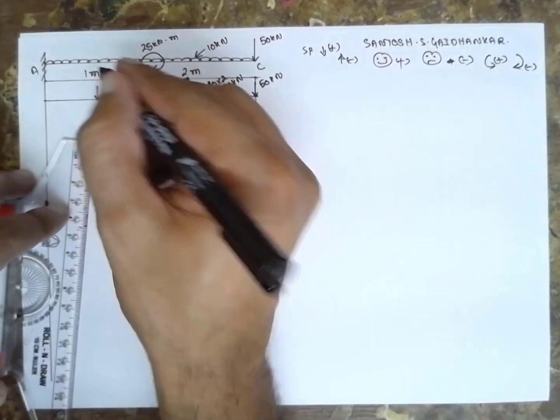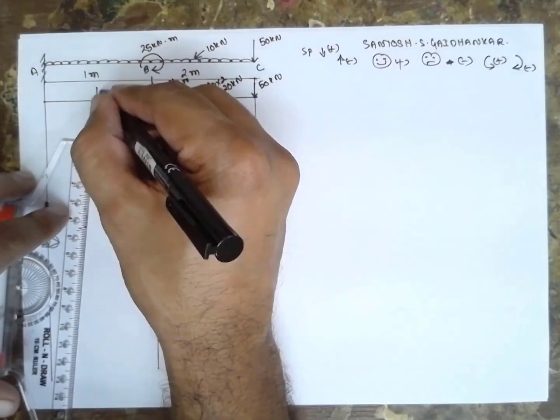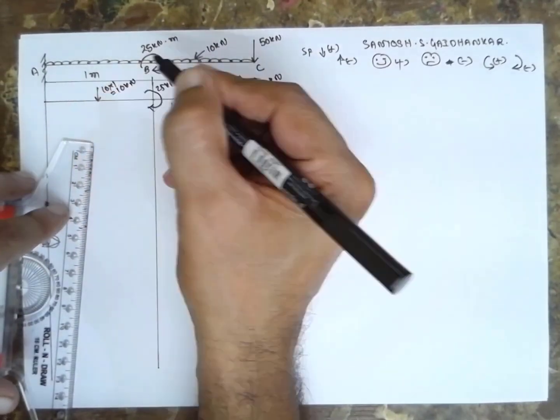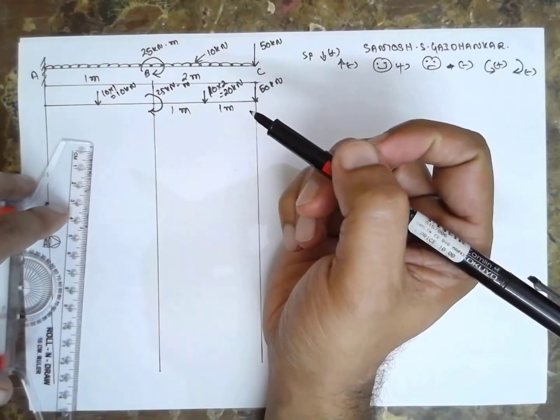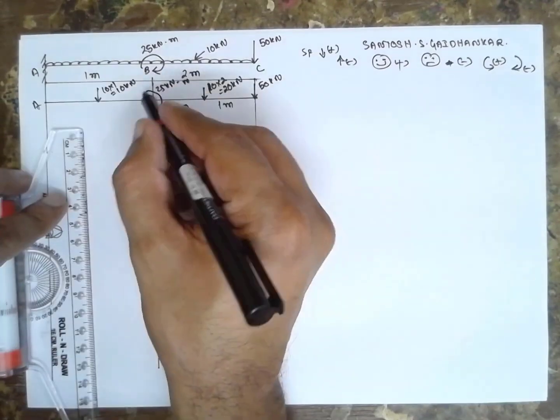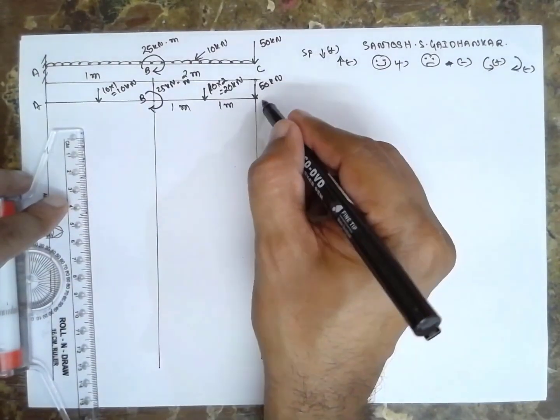Again there is UDL exactly at the center. The arrow is downward, 10 x 1 = 10 kN. This is A, this is B, and this is C.